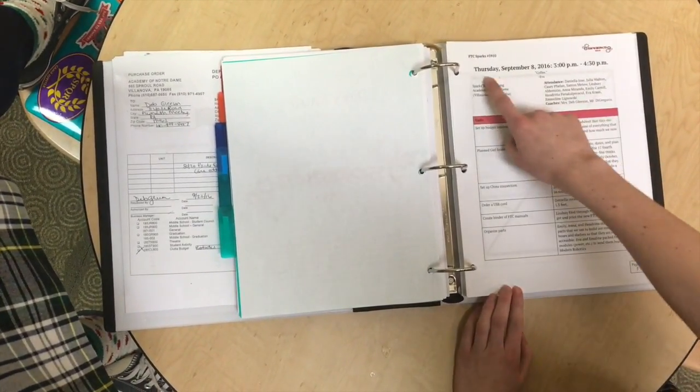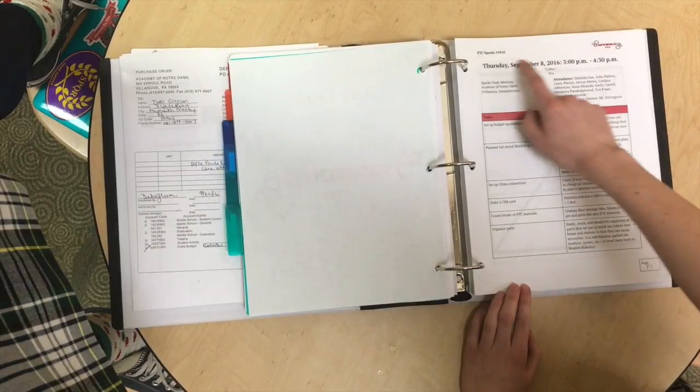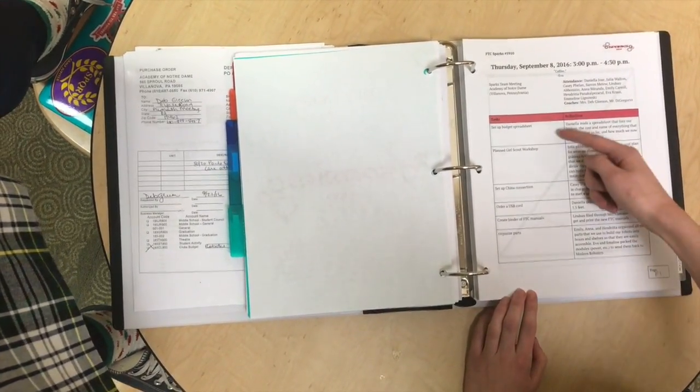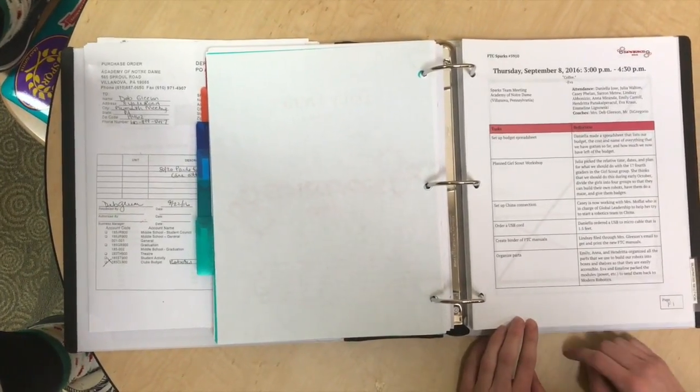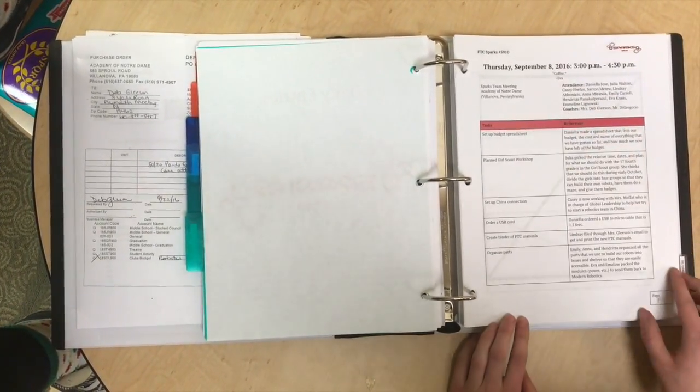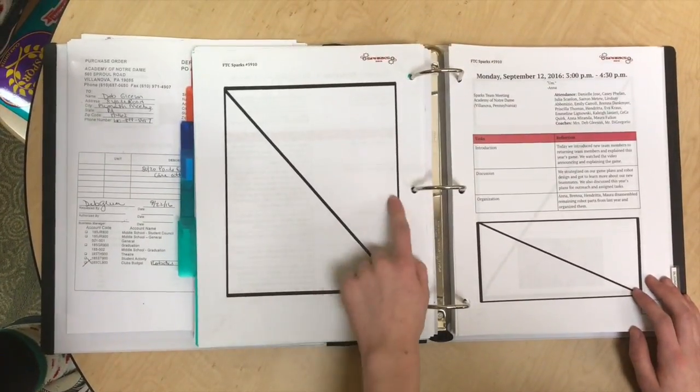Each daily entry should include everything that happens at a meeting, including its date and time, who was present, and what each team member did. These entries should be very detailed and specific about what you did and how you did it, including any problems you faced and how you fixed them.